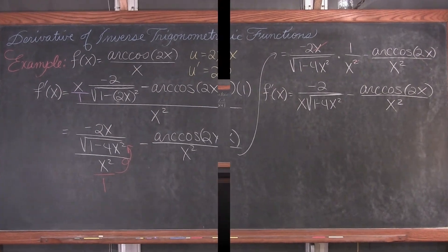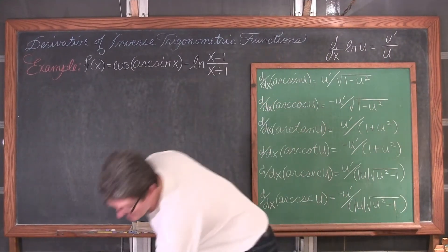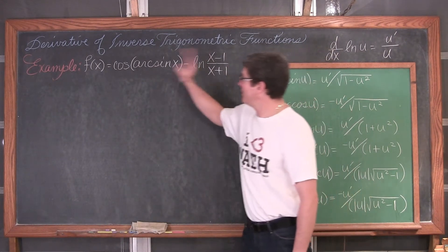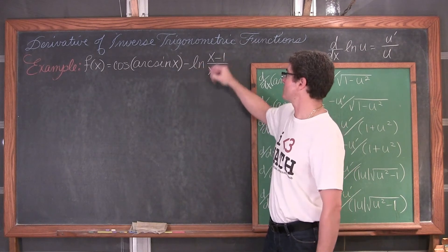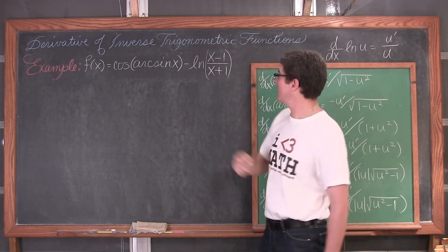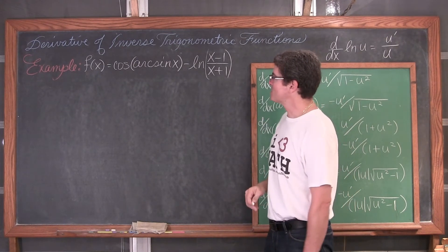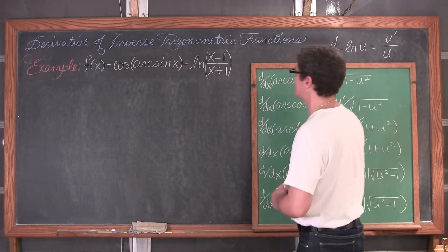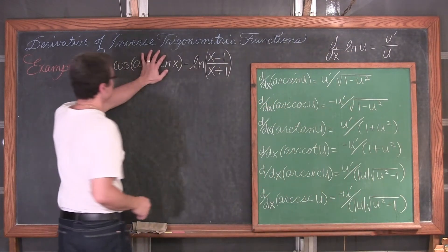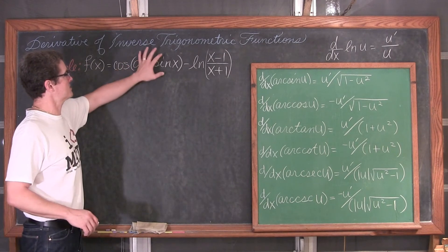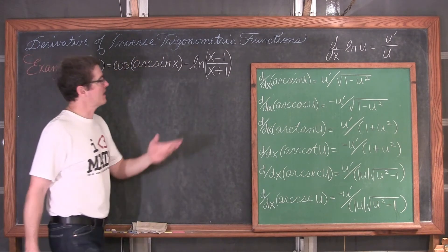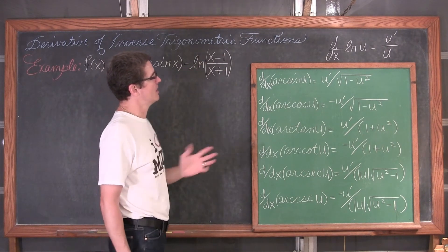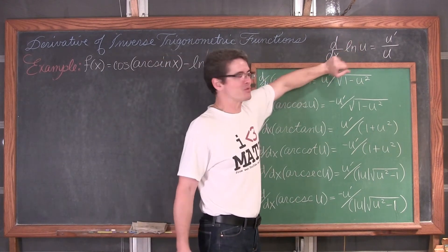One more! For our last example we have f of x equal to cosine of arc sine of x minus the natural log of x minus 1 over x plus 1. A fairly complicated problem, but if you take it in small pieces maybe it is not too bad. We have an inside function for cosine — u is arc sine of x — and we have the natural log of a quotient, so we want to expand that natural log function.